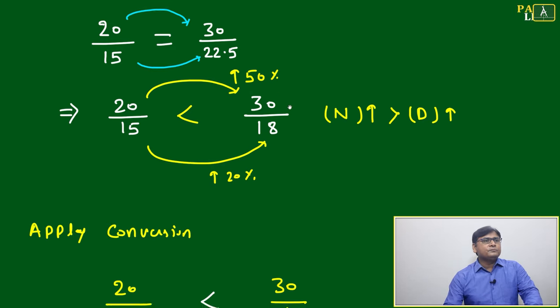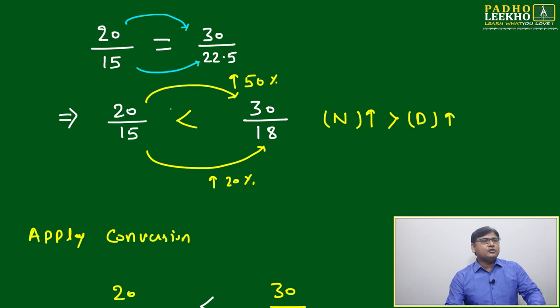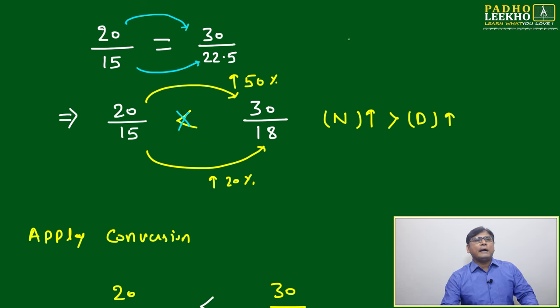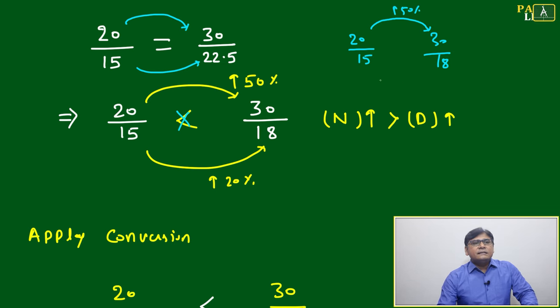Now suppose you have two ratios. You don't know if it is greater than or equal to. You have 20 by 15 and another ratio is 30 by 18. Between these two, it will be like this or it will be like this - how to decide? We'll check: numerator is changed by 50%, and this is changed by how much? This is not 50, that is 20%.